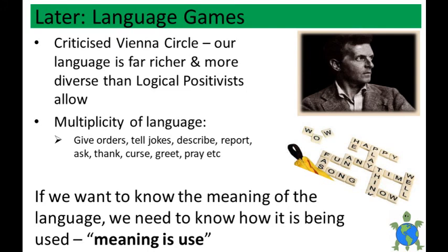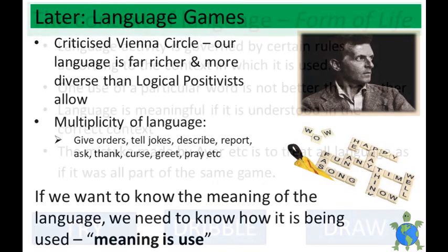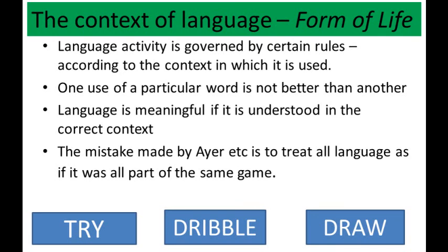This later philosophy of Wittgenstein, laid out in Investigations, is commonly referred to as language games. Science, maths, poetry, sport and religion are all examples of different games where the language being used is specific to the context or, as Wittgenstein calls it, the form of life. Think about the following words: try, draw, dribble. They could mean a range of different things depending on the context. If you enjoy rugby, football or basketball then these words might have a specific meaning within that particular game, but if you're not into sport then they probably mean something quite different.